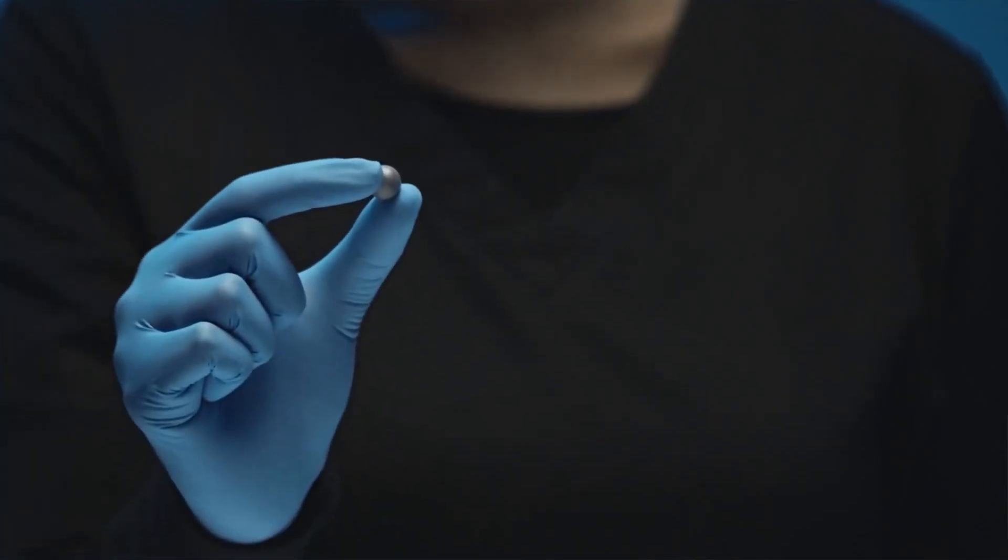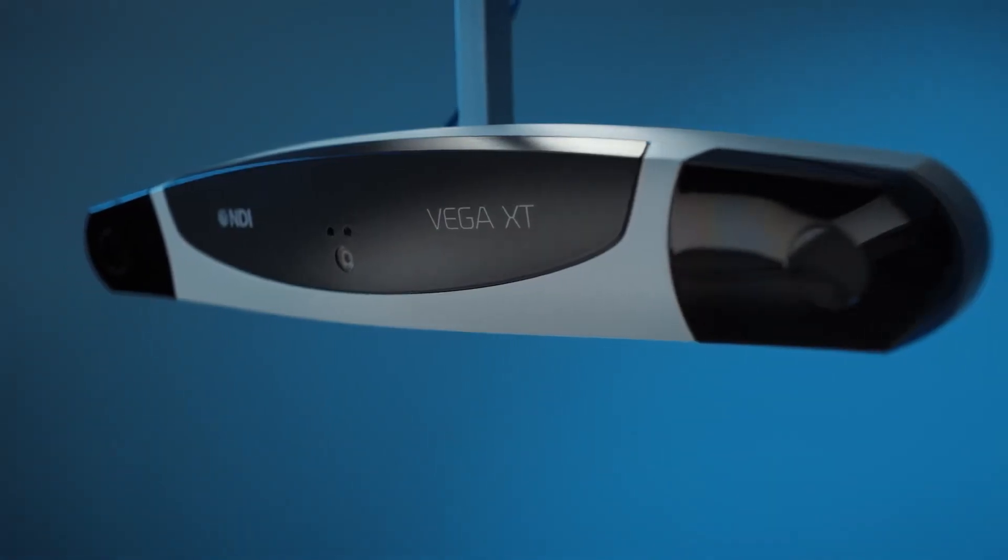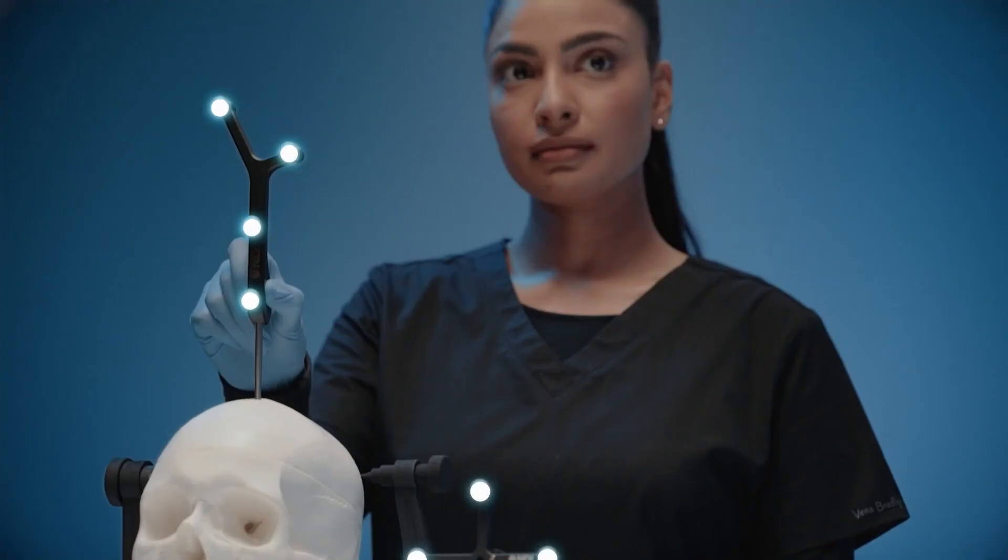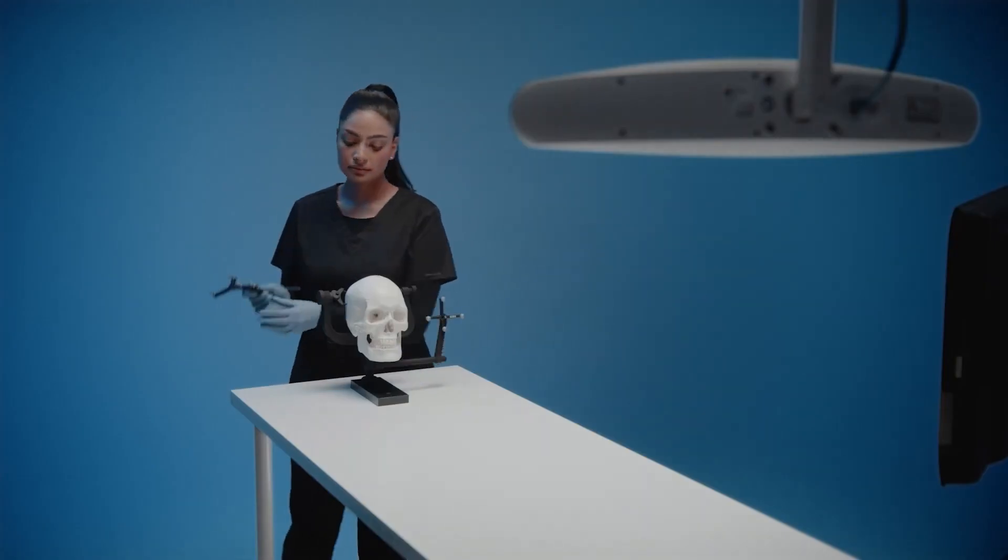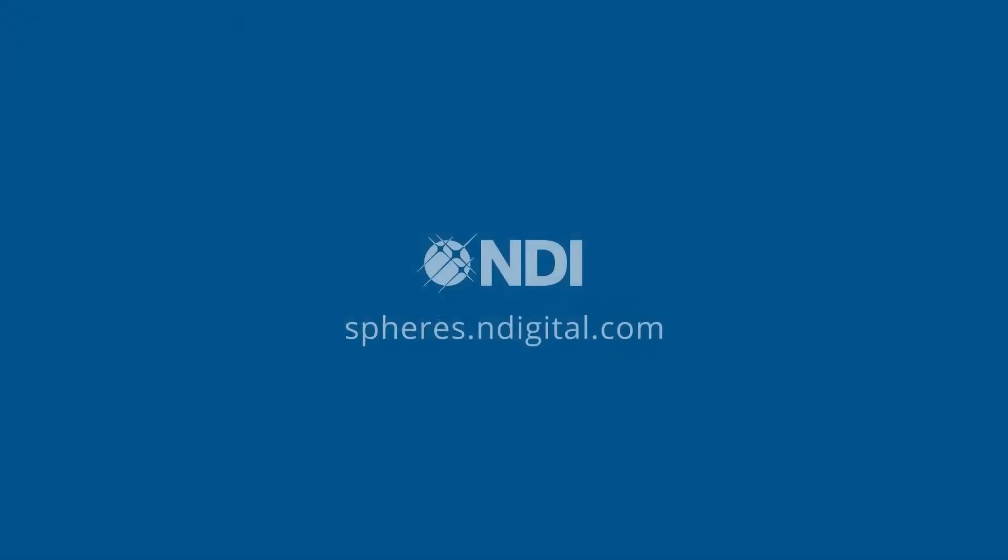NDI passive spheres are used to calibrate the NDI Polaris optical tracker during factory calibration. They are engineered to maximize optical measurement performance. For more information, visit spheres.ndigital.com.